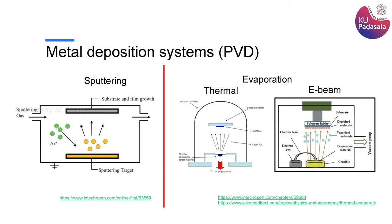This is why I gave the analogy of water boiling and keeping a lid on top - exactly the same thing is happening in evaporation. You are boiling the water and keeping a lid on top, forming a nice uniform layer of water vapor on that surface. In the same way, if you heat your metal in the bottom crucible and evaporate it, keeping your substrate on top, you will get a nice uniform layer of metal - that is how this process gives a very uniform coating of metal on top of your wafer.